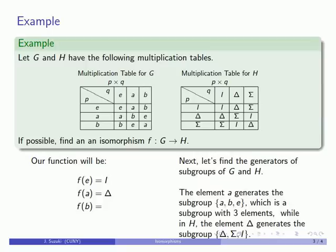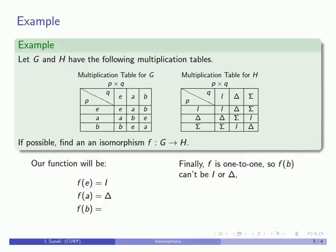And then finally, since an isomorphism must be a one-to-one function, f of B can't be I, can't be delta, and because an isomorphism has to be onto, f of B has to be whatever's left over. In this case, f of B must be sigma.